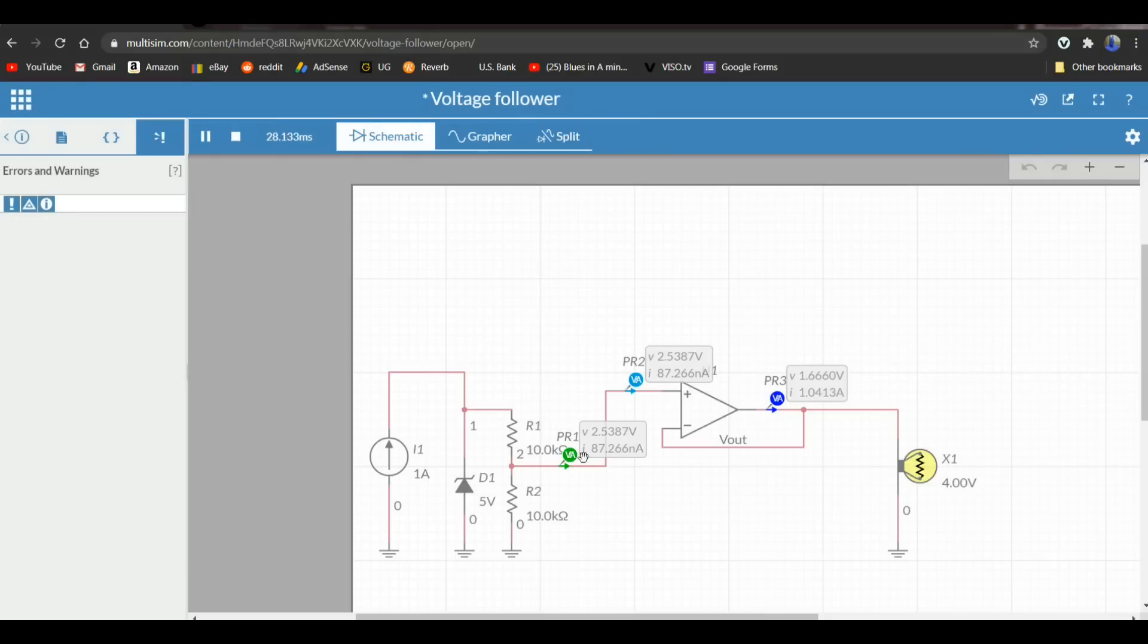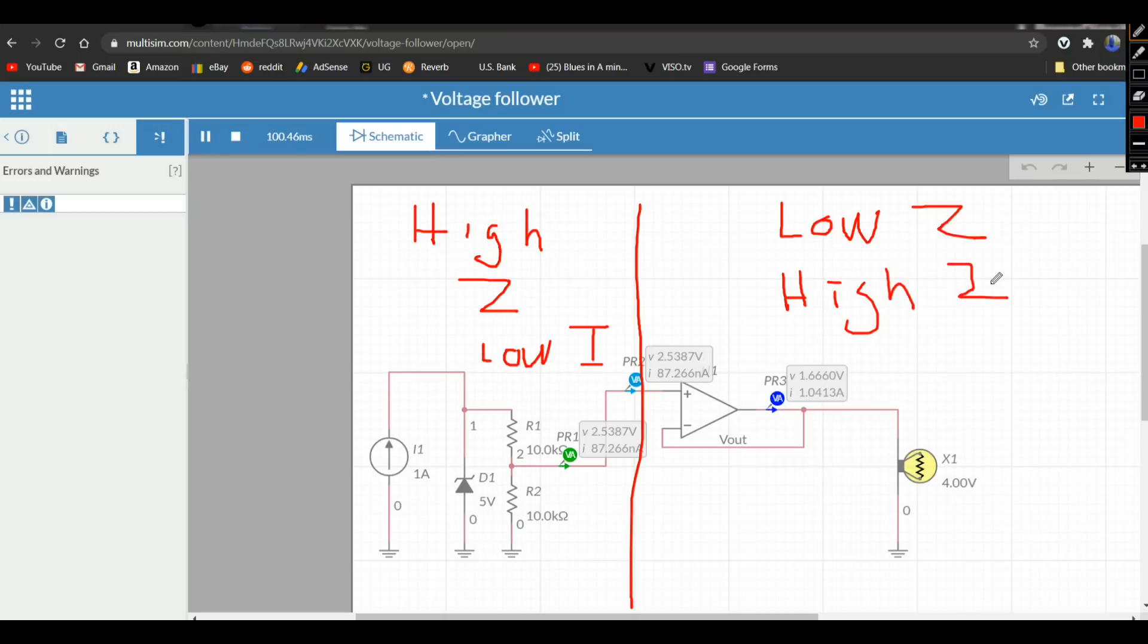There we go. So the point of this entire thing, the voltage follower, is we have taken our circuit and split it into our high Z which is low current, and this side is low Z, low impedance. We've created that buffer between this side and this side and that is the beauty of the voltage follower.